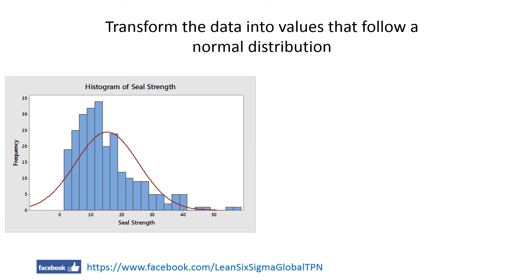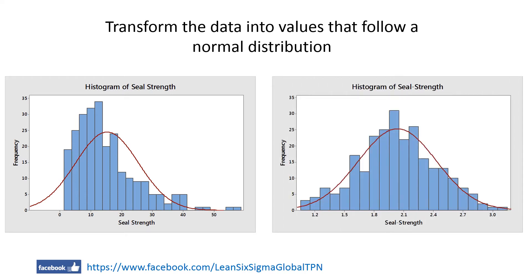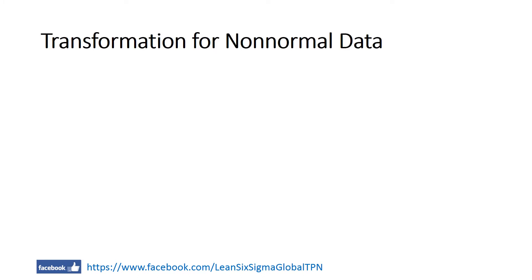Here we see the before-transformation data, and after transformation the data follows a normal distribution. We normally use two transformation methods to transform non-normal data to normal data: the Box-Cox transformation and the Johnson transformation.